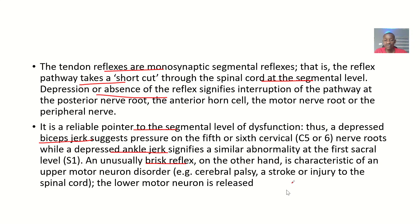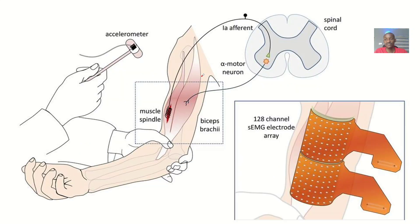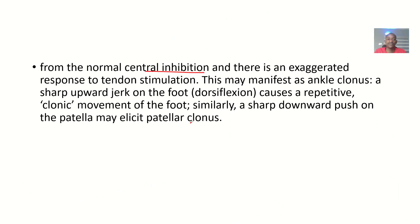An exaggerated brisk reflex, on the other hand, is characteristic of an upper motor neuron disorder such as cerebral palsy, stroke, or injury to the spinal cord. The lower motor neuron is released from normal central inhibition, and there is an exaggerated response to tendon stimulation. This demonstrates an upper limb deep tendon reflex — protect the patient with your hand before you tap.